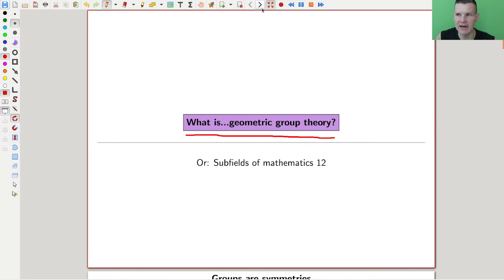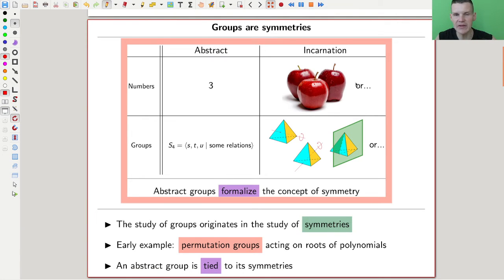But to get us all started, group theory was invented quite a while ago. It took a while until it was really called a field. But the idea is that groups formalize symmetries. So originally, people were thinking about symmetries for a long time, but the concept of a group came up as permutation groups acting on roots of polynomials. So this is like Galois theory.